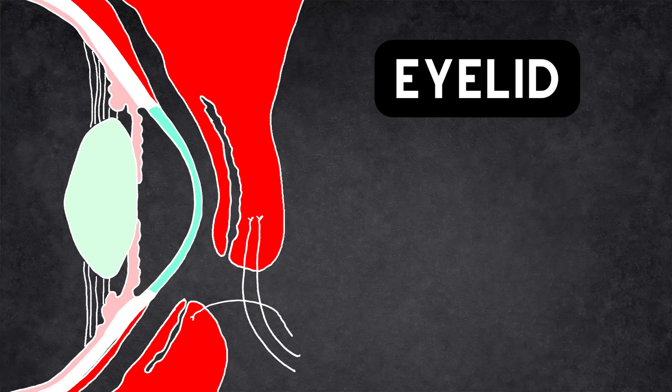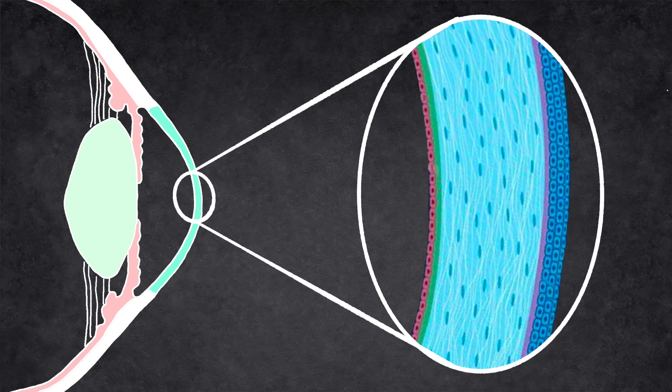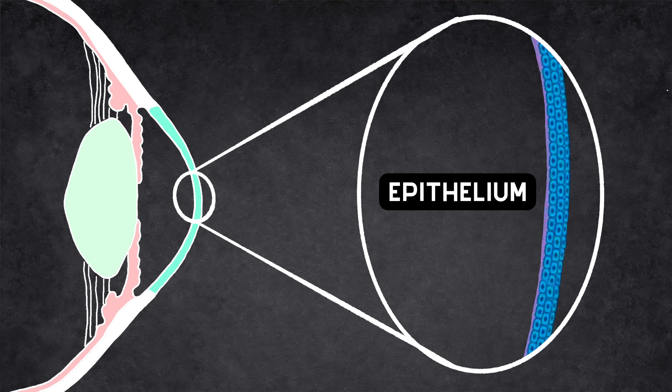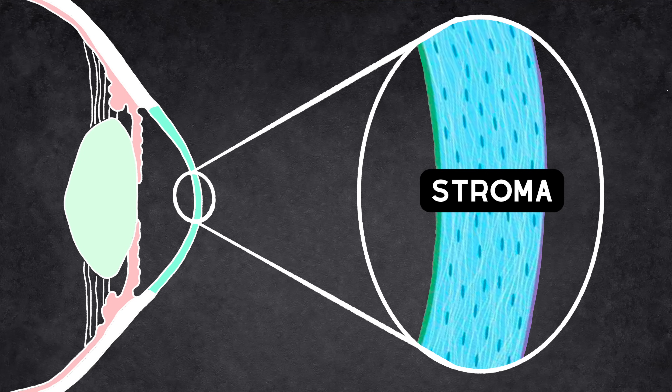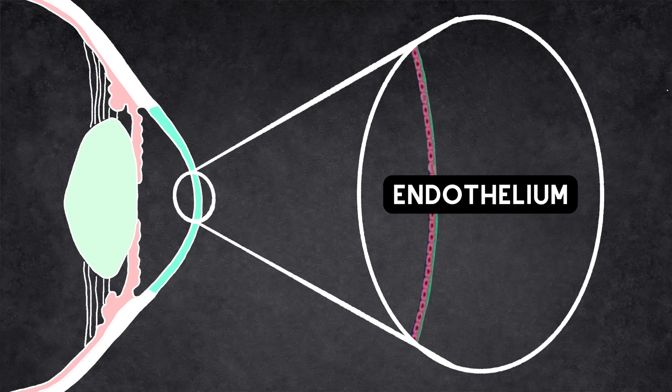The eye and eyelid work together to provide vision that is essential for our daily lives. The front part of the eye, known as the cornea, bends light onto the retina so that things are in focus. The eyelid helps protect and maintain the cornea by producing tears so it doesn't get damaged. The cornea can be divided into three layers: the brittle and expendable epithelium, the meaty and robust stroma, and the delicate and fragile endothelium.